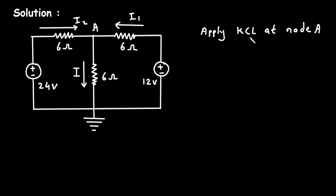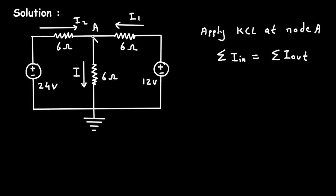Let's apply KCL at node A. KCL stands for Kirchhoff's current law. According to KCL, summation of all the currents entering a node is equal to summation of all the currents leaving the node. Here I1 is the entering current and I2 is the entering current, and I is the leaving current.